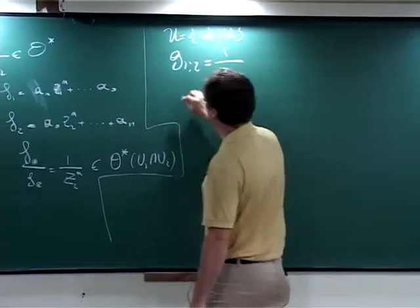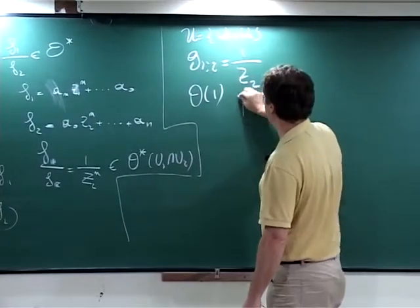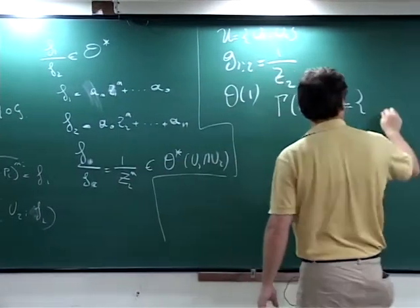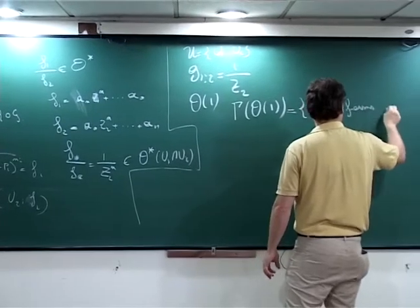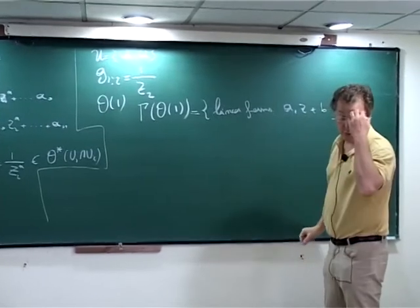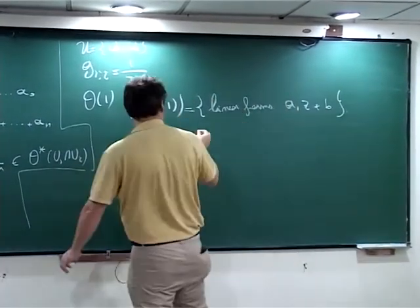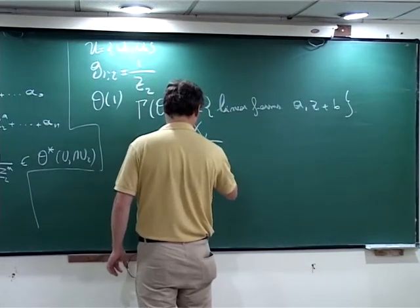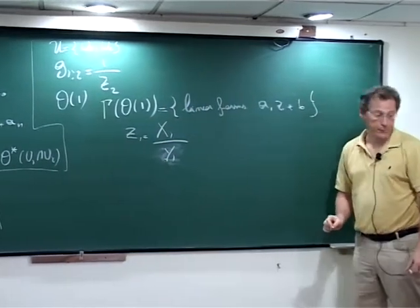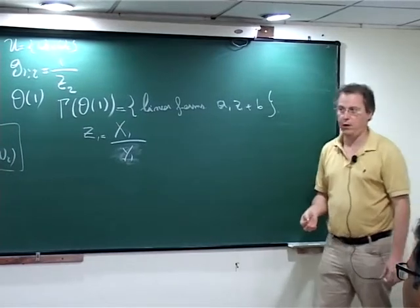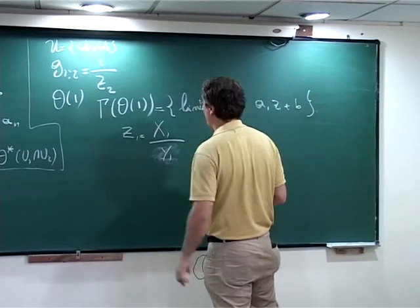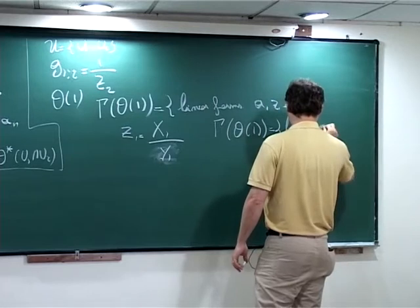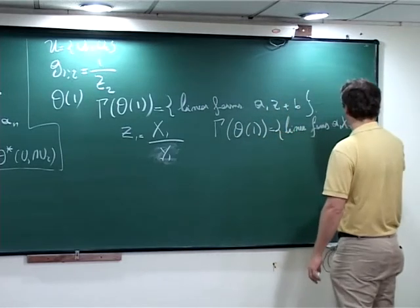The point is that if you choose the cover given by U1 and U2 with transition 1 over Z2, you are obtaining data defining a cocycle — so a line bundle over P1. And this line bundle is called O of 1. The global sections of O of 1 are the linear forms A1·X plus B1·Y, which are the homogeneous coordinates over P1.